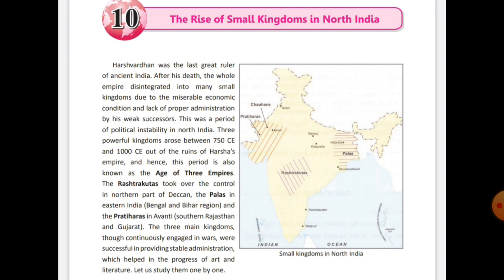The rulers of these small kingdoms were always busy fighting among themselves, so this was a period of political instability in North India. In such a situation, three powerful kingdoms arose between 750 CE to 1050 CE out of the ruins of Harsha's empire. Because of these three kingdoms, this period was known as the Age of Three Empires.